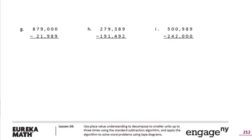G: We have a lot of zeros in a row. I can't do 0 minus 9, and I can't borrow from any of these zeros. So I need to go all the way to the 9, make it an 8. I have to start here, going place value by place value — that becomes a 9, and then this becomes a 10. This becomes a 9. 10 minus 9 is 1. 9 minus 8 is 1. 9 minus 9 is 0. 8 minus 1 is 7. 7 minus 2 is 5. And 8 minus nothing is 8. Answer: 857,011.